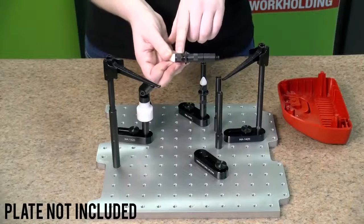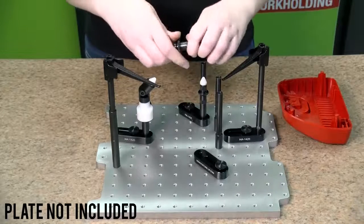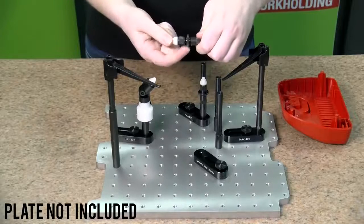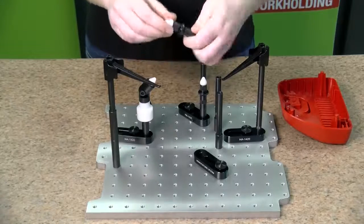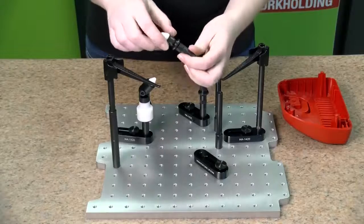The adjustable standoff is used to make incremental, infinite adjustments in a range from 0 to 1 quarter of an inch. Simply turn the knob to whatever height you need it and lock it down with a check nut.